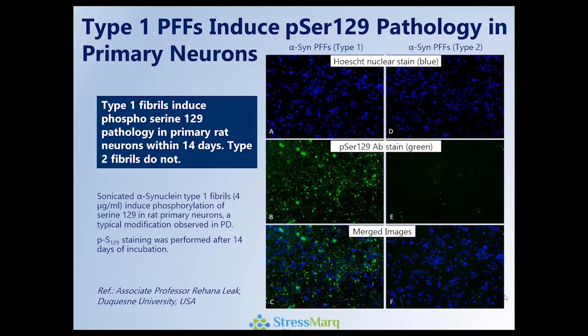If we take type 1 or type 2 fibrils and inject them into rat primary neurons and look for the evolution of pathology measured using an antibody to phosphoserine 129, shown here in green, we see a tremendous difference. On the left-hand side with type 1 fibrils, we see a lot of pathology generated. On the right-hand side, we see essentially no pathology generated — another key hallmark of the differences between type 1 and type 2 fibrils.